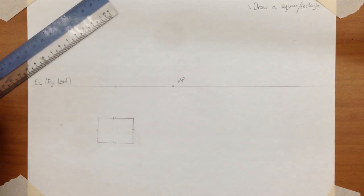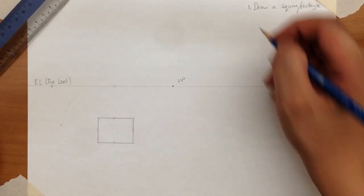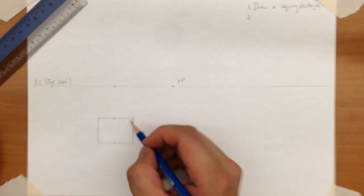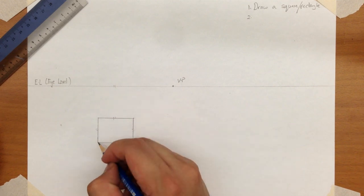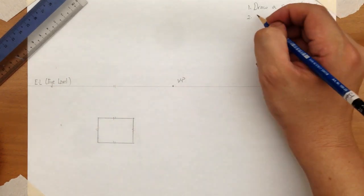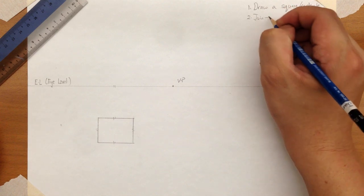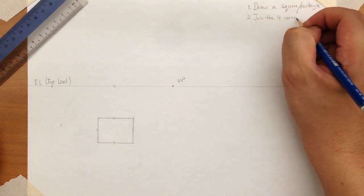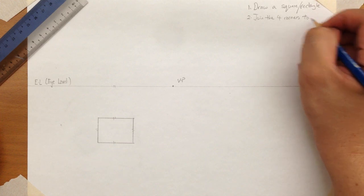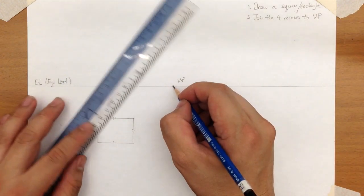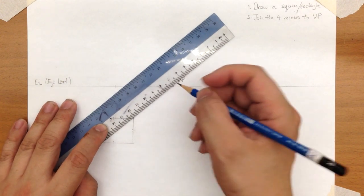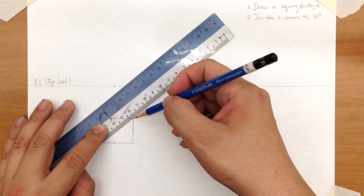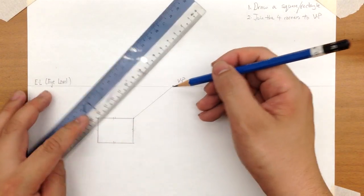What's the second step now? The second step is very simple. Once you have the square or rectangle, the four corners join back to the vanishing point. Drawing the corners. So for this, remember not to draw too hard with your pencil. These are just construction lines. So we'll draw it lightly.